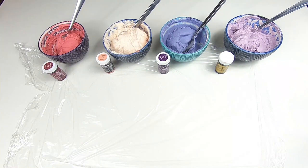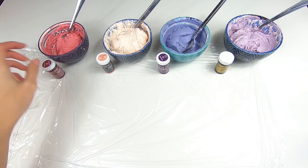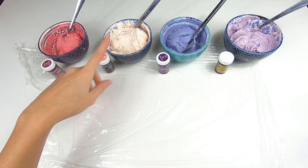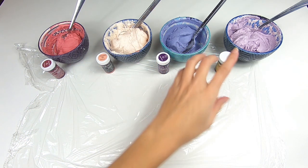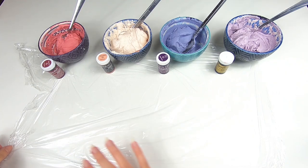I've got my buttercream here and I've divided it between four bowls and I've colored each the different colors. This one's burgundy, we've got the skin tone, deep purple and the grape violet. I didn't end up using the red shade in the end so I'm just going to stick with these ones.